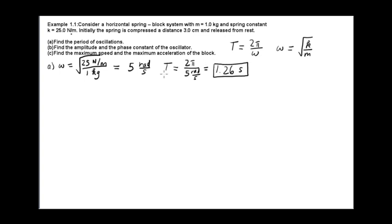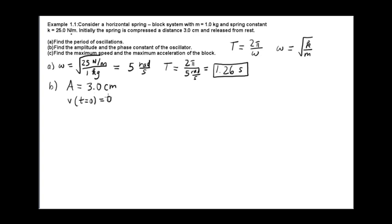Now we want to find the amplitude and the phase constant for the oscillator. We're told the system is compressed a distance of 3 centimeters and released from rest. When it's released, that's time t equals 0, and that's where it will have its maximum displacement. So the amplitude is 3 centimeters. And released from rest means the velocity at time t equals 0 is equal to 0 — that's really helpful.